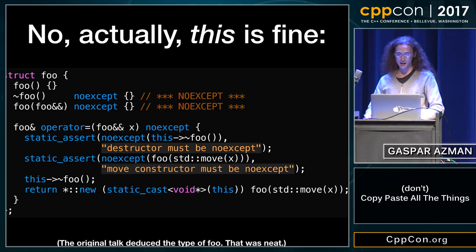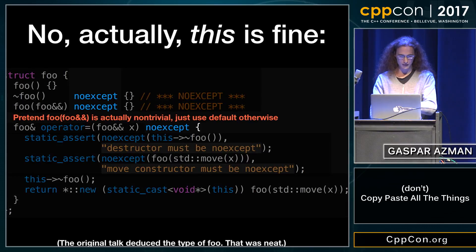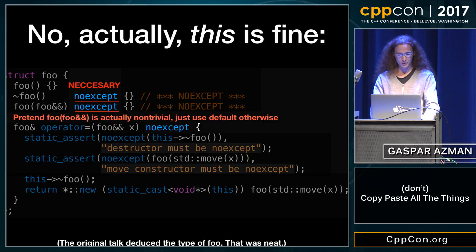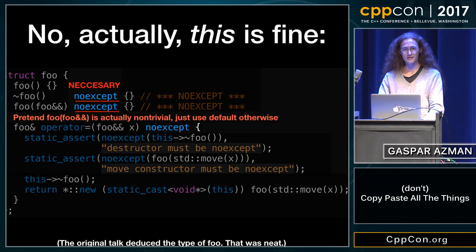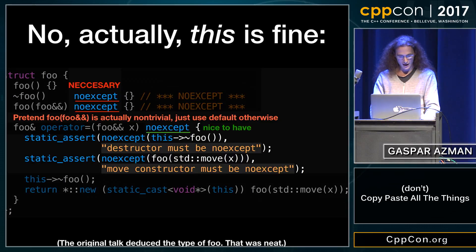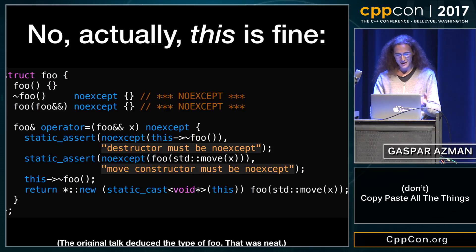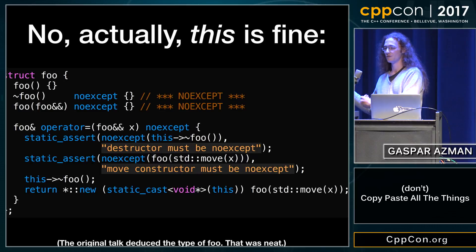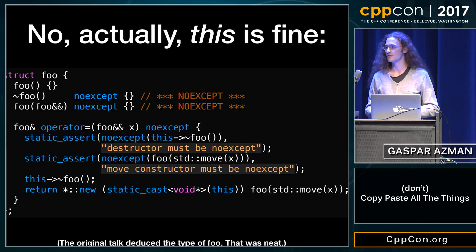With a few changes, this is actually fine. If we add — please pretend that the move constructor is non-trivial — so if we add these noexcepts, which are actually necessary, and those things which strictly are not but will save your life, and therefore this is correct. This is relatively safe to copy-paste because it will break if you do something wrong. But then of course, we all know people who will just delete the static asserts.